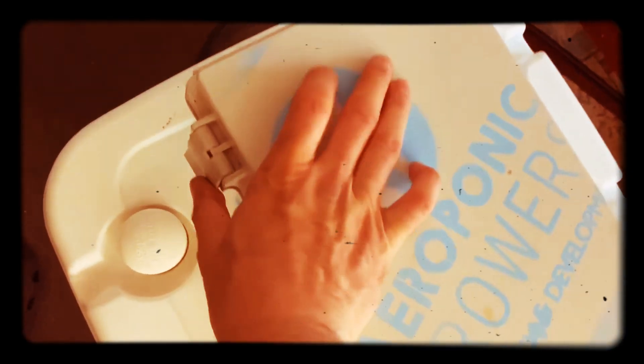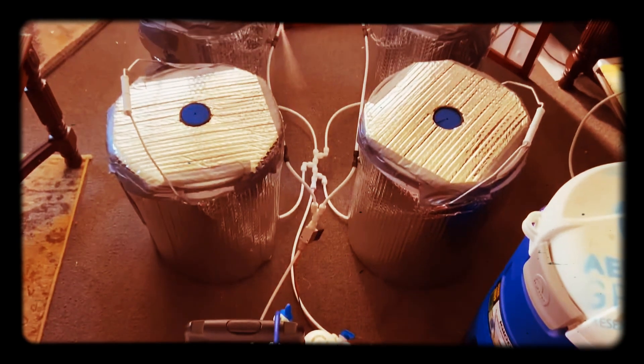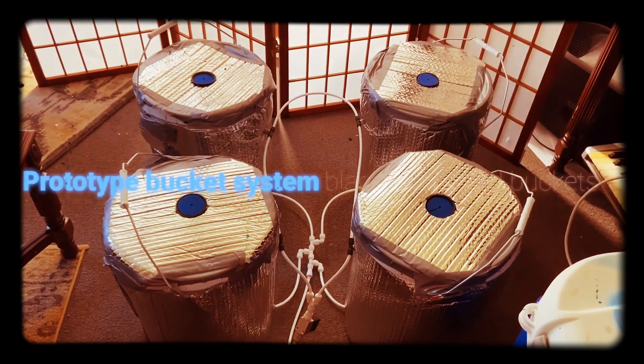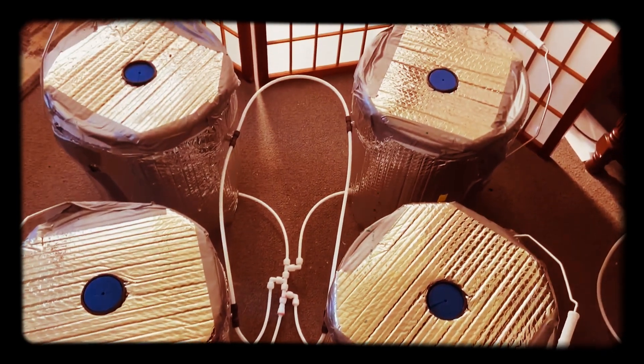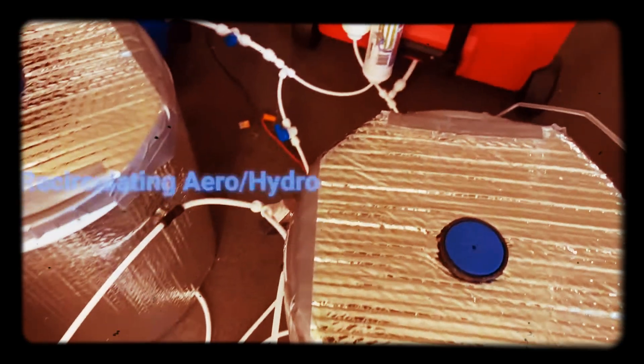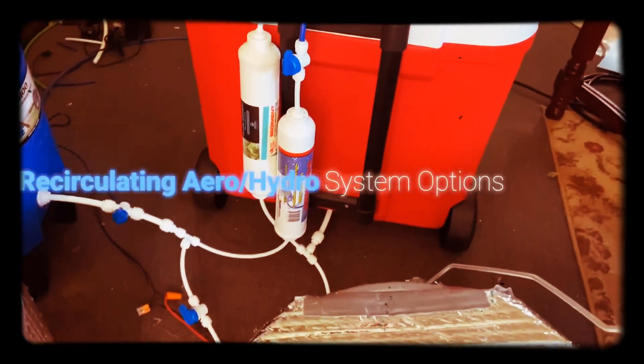The system is set up to be circulated and it will also come in different colored buckets. This is just a prototype. The white buckets are letting light in so I have to put them in foil. I can do that as well.